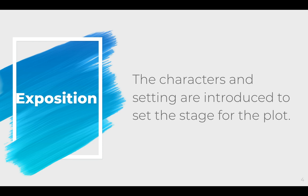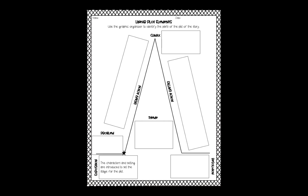Let's start with exposition. This is at the very bottom — the beginning of our plot diagram. This is where the characters and the setting are introduced to set the stage for a plot. Basically, it's the beginning of the story when you find out who the story is going to be about and where they are. Your notes should look like this at this point, with the exposition filled in.